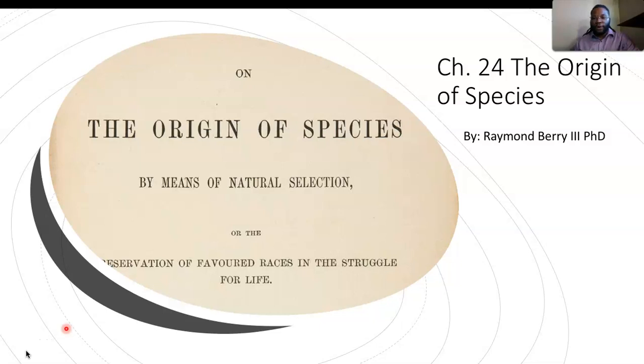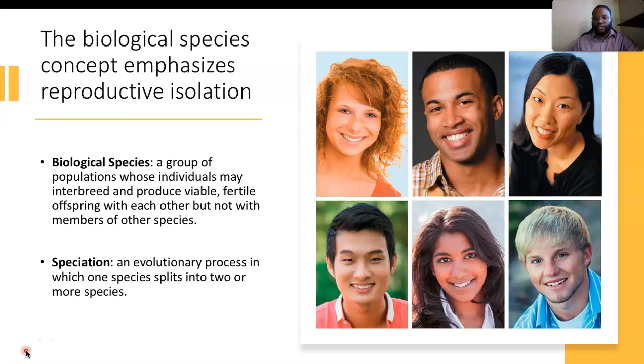Hello everyone, welcome again. This lecture is on chapter 24, the origin of species, dealing with Darwin and his understanding of the means of natural selection.